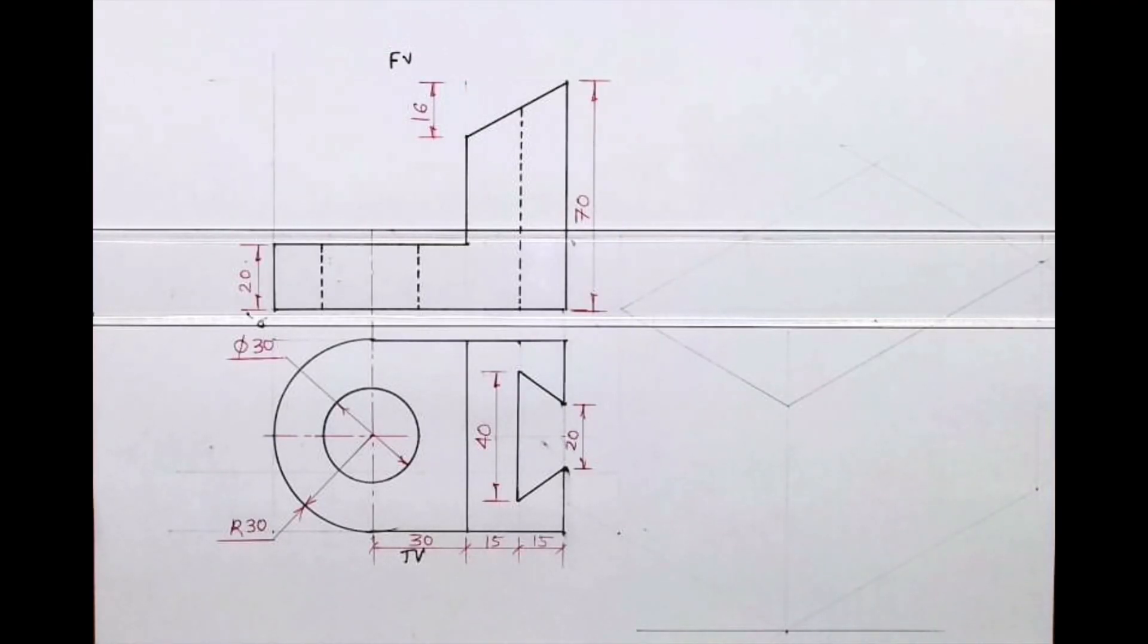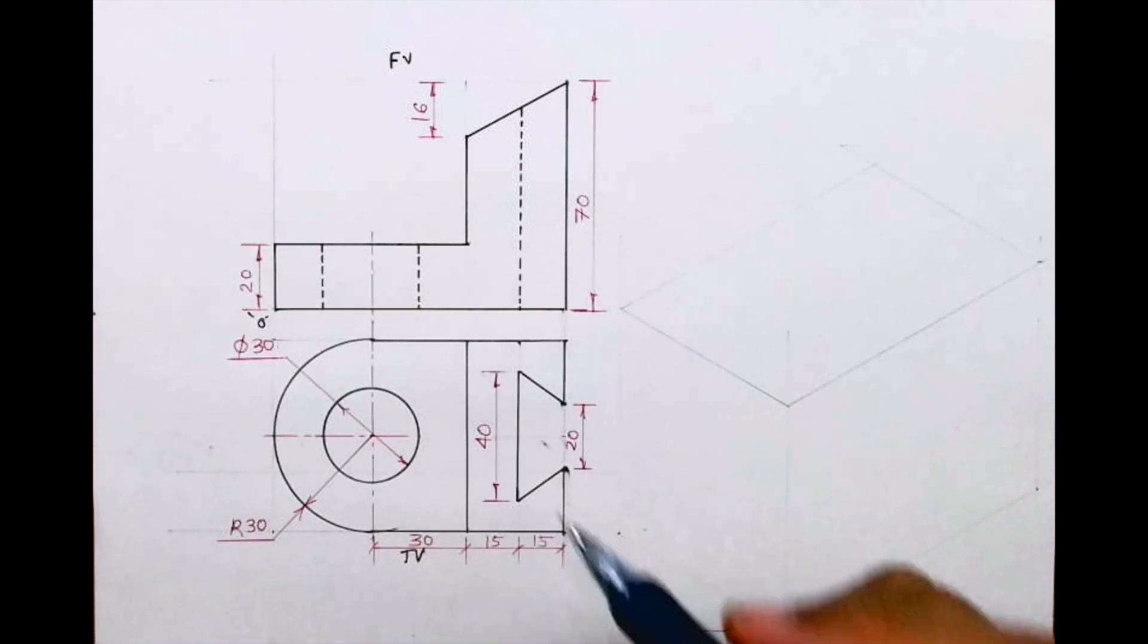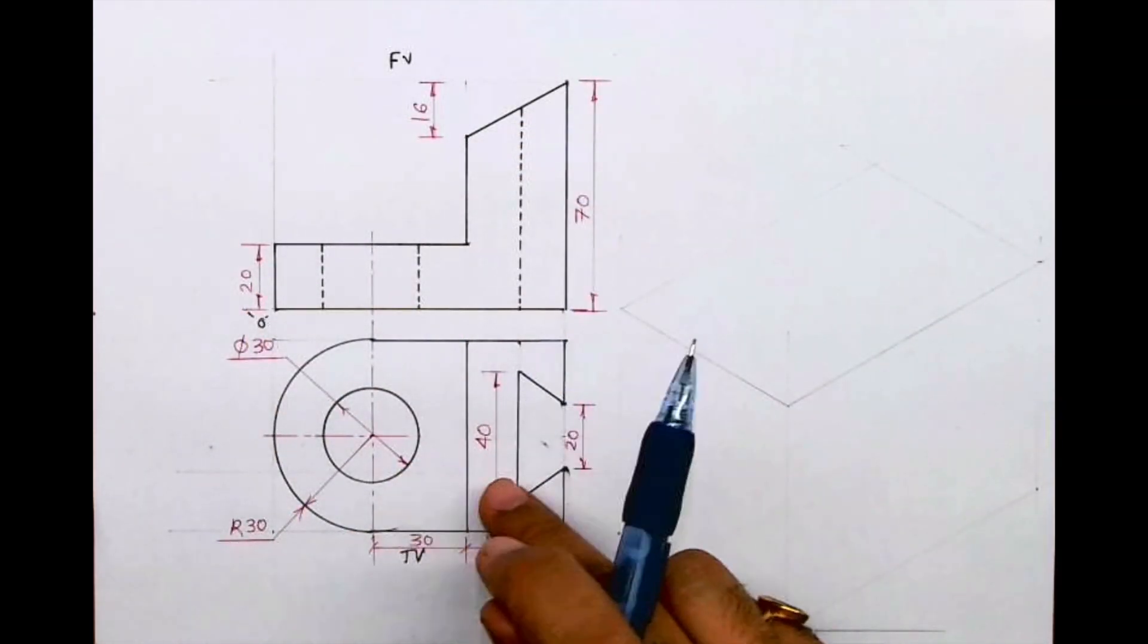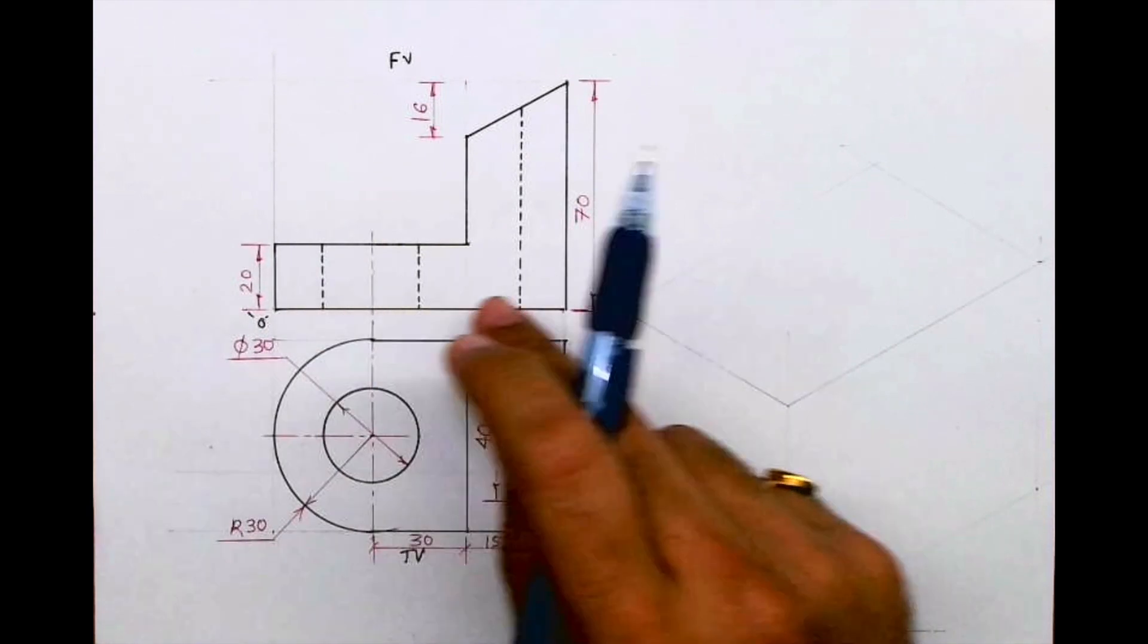Welcome to technical drawing. Today we'll do this sum in isometric. Front view and top view is given. If you see, front view has only one part, top view has two parts. We'll start with front view.